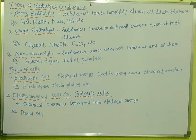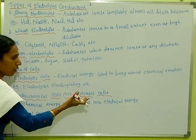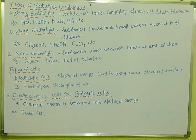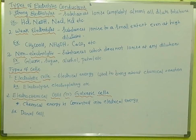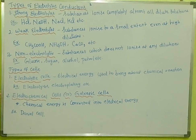Electrochemical cells, also known as galvanic cells, convert chemical energy into electrical energy. So, chemical energy and electrical energy are interconverted. In a galvanic cell, chemical energy is converted into electrical energy. Examples include electrolysis and electroplating for electrolytic cells, and galvanic cells for electrochemical cells.